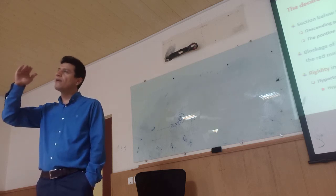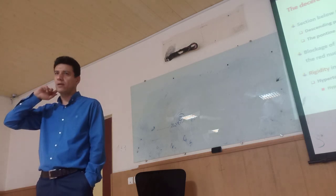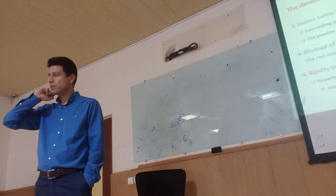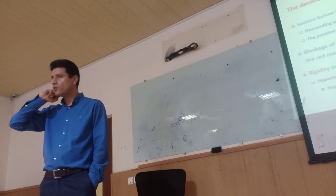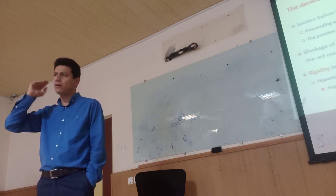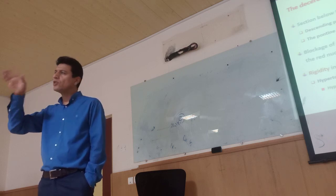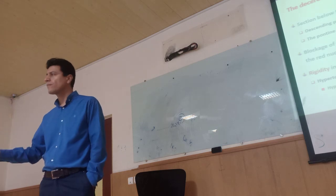What happens if we have damage at the level of the mid-brain? If we have damage at the mid-brain level, do we have damage at the reticular formation of the pontine and medulla? No, because the lesion is in the mid-brain. So the origin of the pontine and medulla reticular spinal tracts are intact.